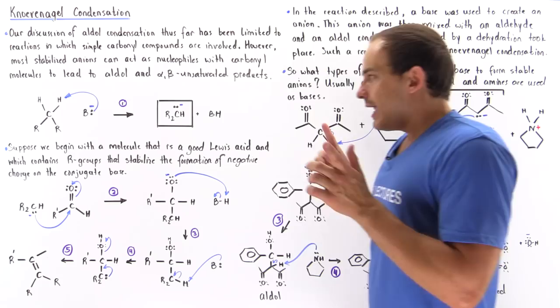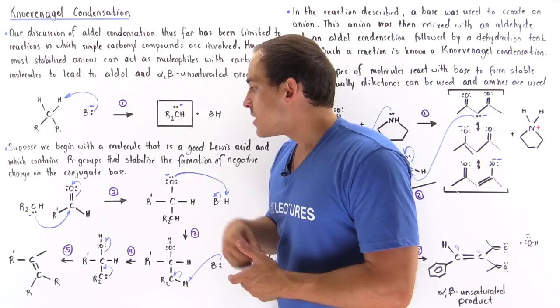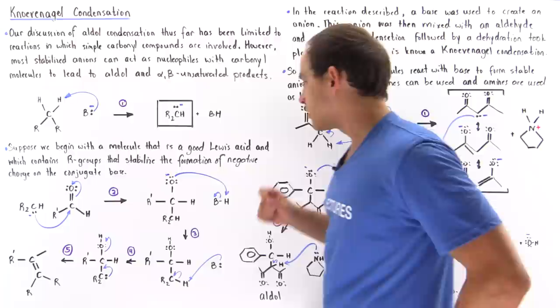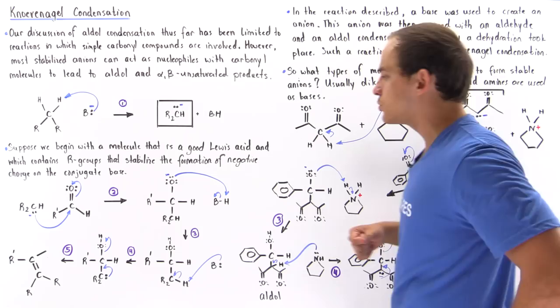So in step number two, we take this anion and react it with an aldehyde, and we form this intermediate. Now notice on this aldehyde, I've designated this group with R prime to basically differentiate it from this group, which is designated with our letter R. So basically a bond is formed between this carbon and this carbon in the process that displaces our pi bond and places our two electrons onto this electronegative oxygen. So now in step two we have this intermediate.